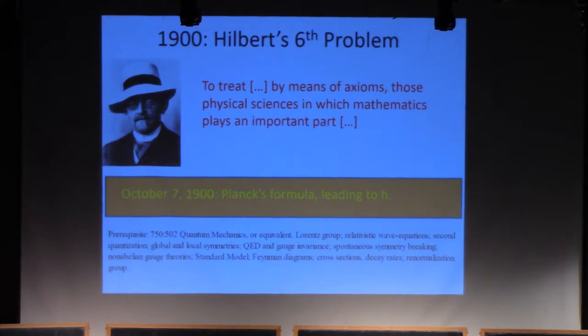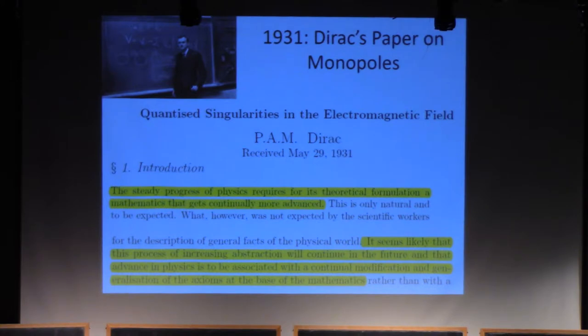My favorite of all of these is the opening of Dirac's paper on magnetic monopoles where he introduced the idea of fiber bundles and connections on fiber bundles into physics. It took a long time before the physicists really understood that's what he did, but that's what he did. He began his paper by saying, the steady progress of physics requires for its theoretical formulation a mathematics that gets continually more advanced. It seems likely that this process of increasing abstraction will continue in the future and that advance in physics is to be associated with a continual modification and generalization of the axioms at the base of the mathematics.